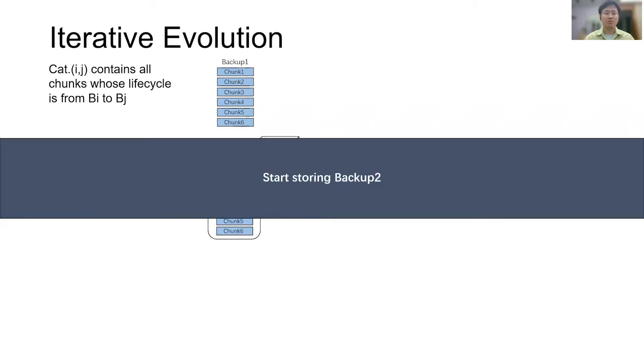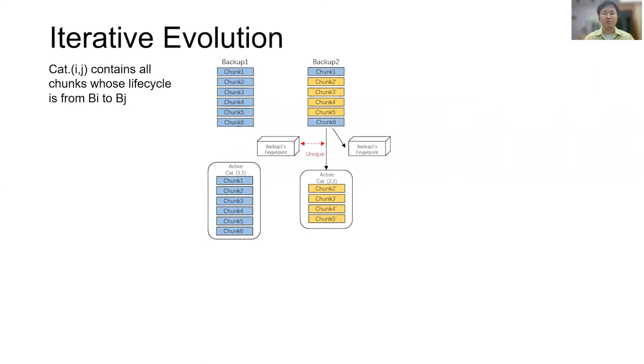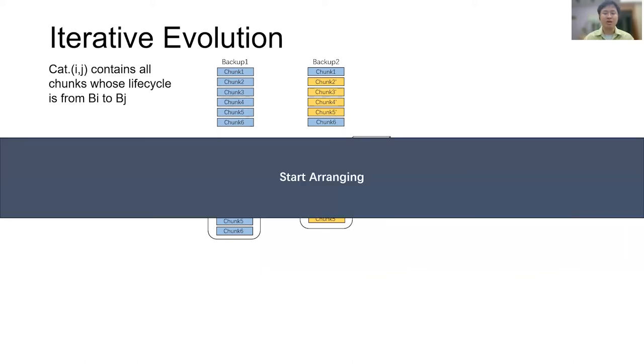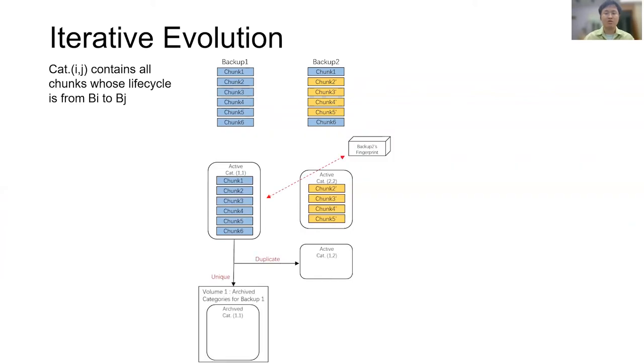After that, we start storing backup 2. Similarly, we also record fingerprints of backup 2's chunk and deduplicate internal and adjacent chunks. After that, backup 1's fingerprint is useless and could be released. All unique chunks in backup 2 compose cat 2.2, and we have to run arranging to update chunk layout. Because some chunks in cat 1.1 are referenced by backup 2, they need to be migrated to cat 1.2. Therefore, in this arranging process, we traverse cat 1.1 with backup 2's fingerprint and migrate duplicate chunks to cat 1.2. Left chunks remain in cat 1.1 and are archived. Each arranging will generate a volume to package new archived categories. The arranging is done.